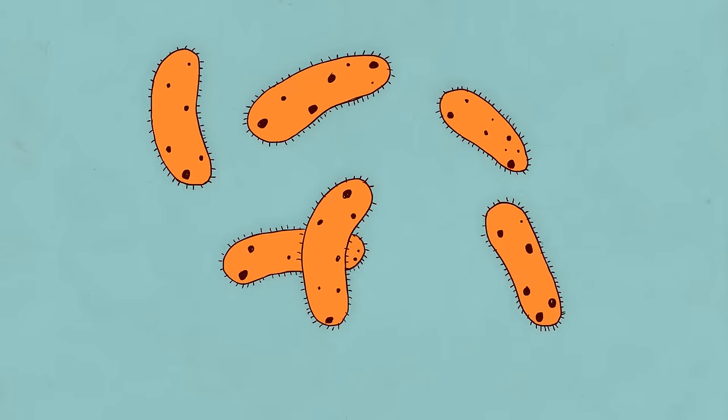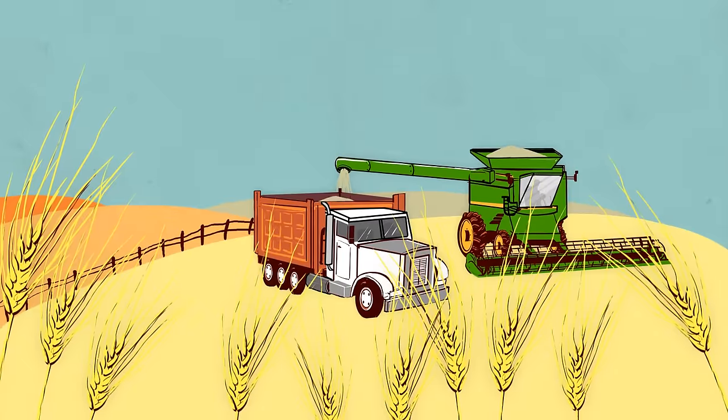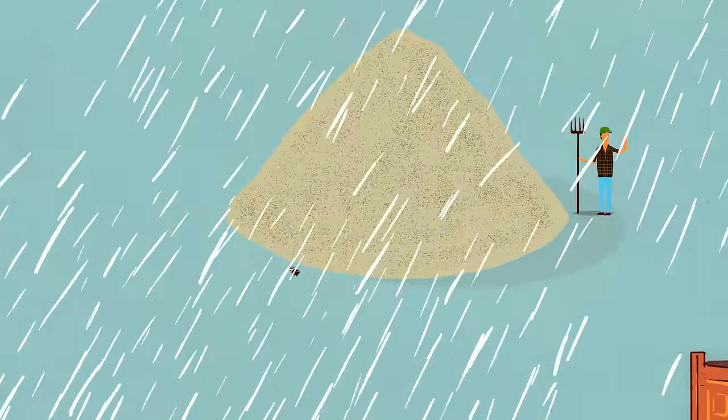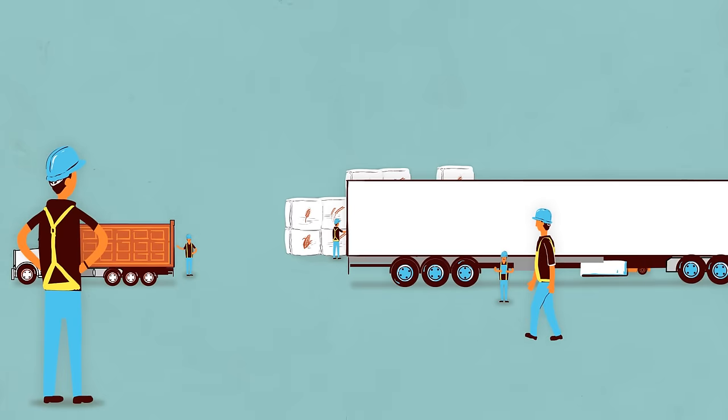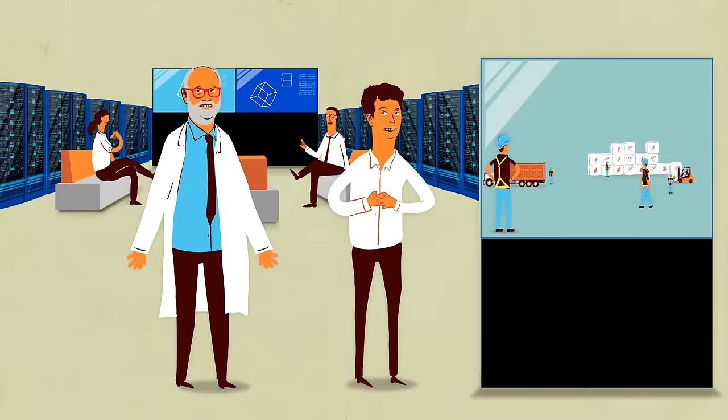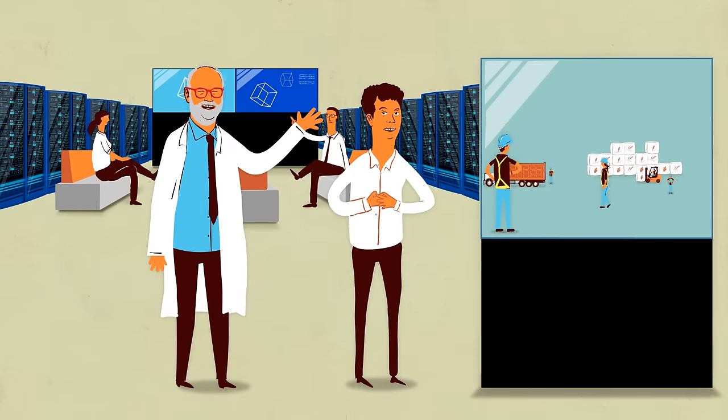This tells us things that we never could have seen before, like where the food was grown, how it was transported, and maybe even what happened en route. Our approach to food safety just got a lot smarter.